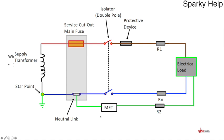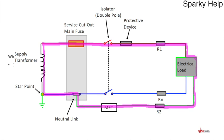Here we have a TNCS circuit drawn single phase for ease. ZS is the path traced when a fault occurs at the furthest point of the circuit: from the line conductor through the load, R2 back through the CPC to the MET, through the earthing conductor, PEN conductor, star point of the transformer, back through the service cable, service fuse, tails, main switch, protective device, line conductor, and back round the load.